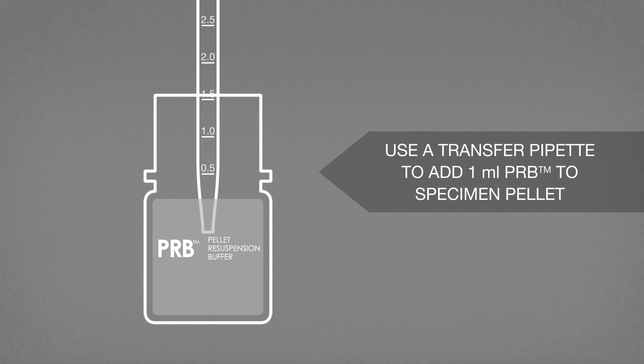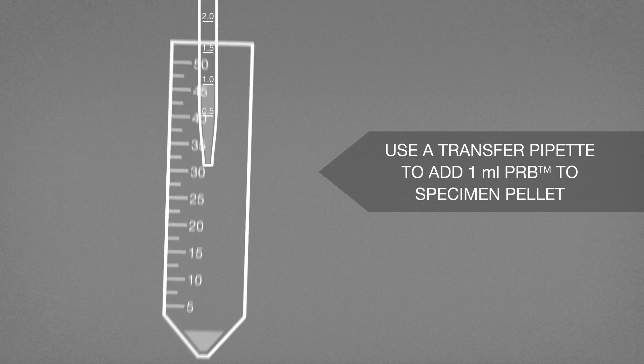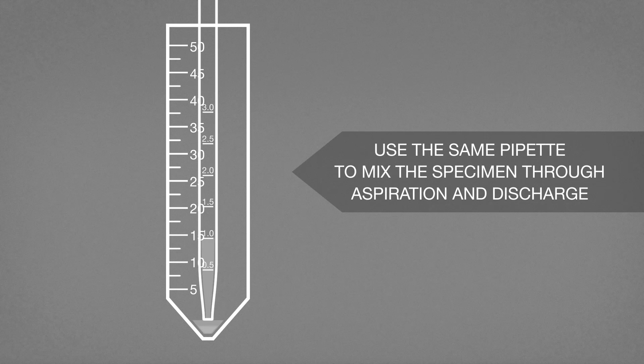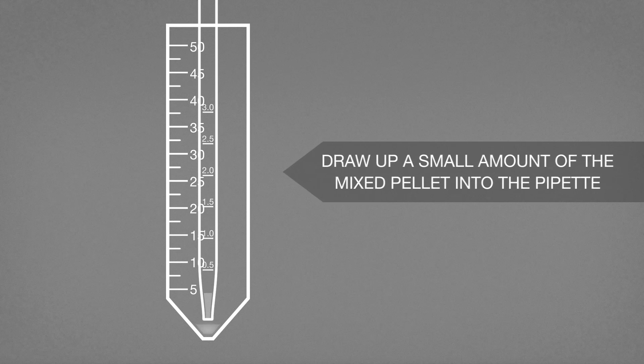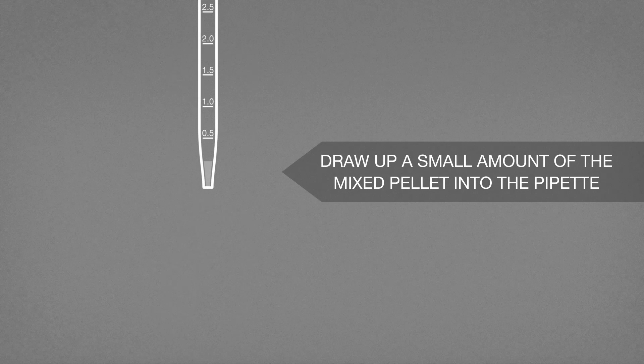Using a transfer pipette, aspirate 1 ml of PRB and add to the specimen pellet. Using the same pipette, carefully mix the specimen through gentle aspiration and discharge. Draw up a small amount of the mixed pellet into the pipette.